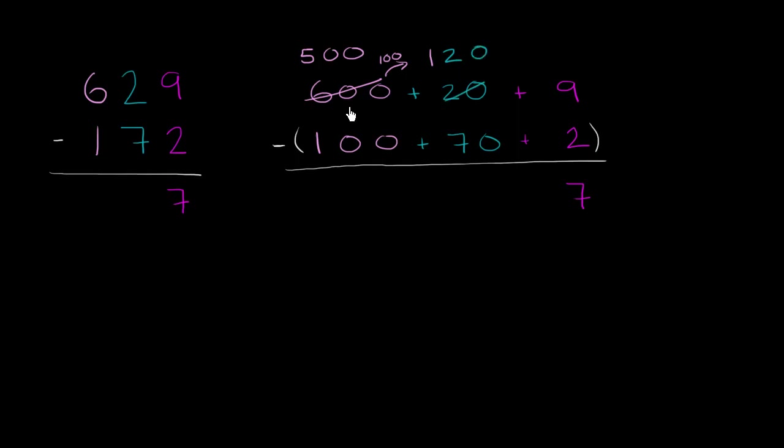So all I did, I didn't change the value of 629. I took 100 from the hundreds place and gave it to the tens place. Notice 500 plus 120 plus 9 is still 629. We haven't changed the value.